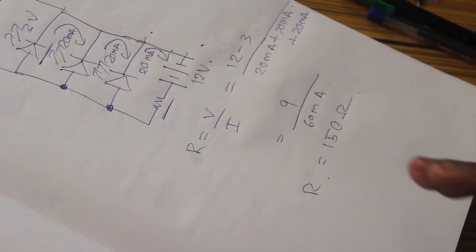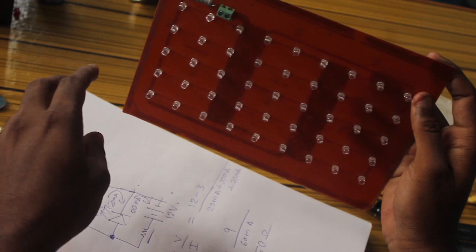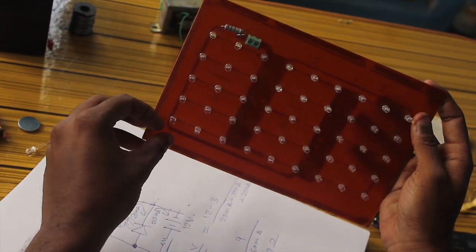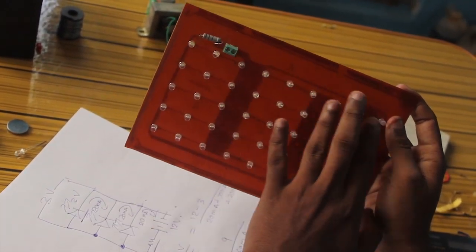By using both series and parallel circuits, you can build this lamp. You can see these are the series connections and these are the parallel connections. We have made it.